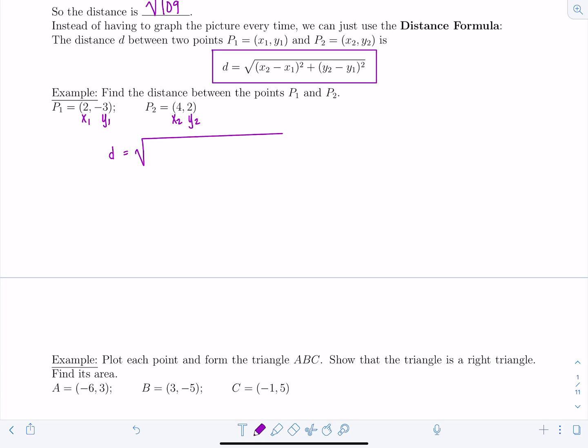So distance equals square root, we have x₂, which is 4, minus x₁, which is 2, quantity squared, plus y₂, which is 2, minus negative 3, so plus 3, squared. And then this is going to be the square root of 2² + 5². That's 4 + 25, so this is √29. Box it and call it a day. Good.